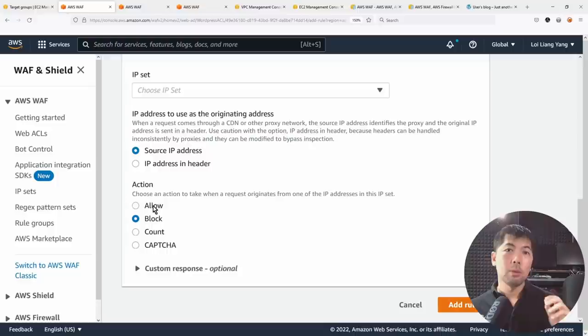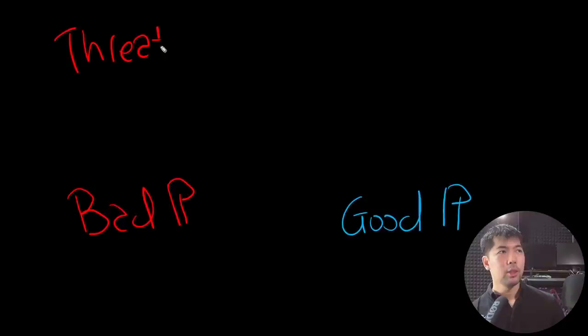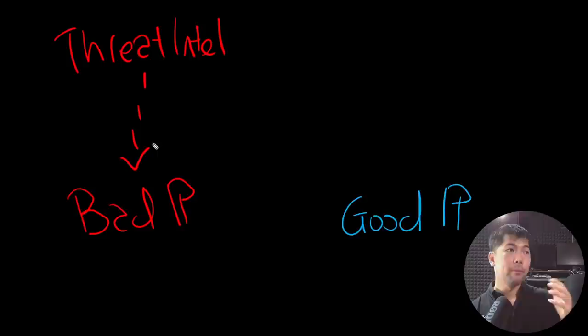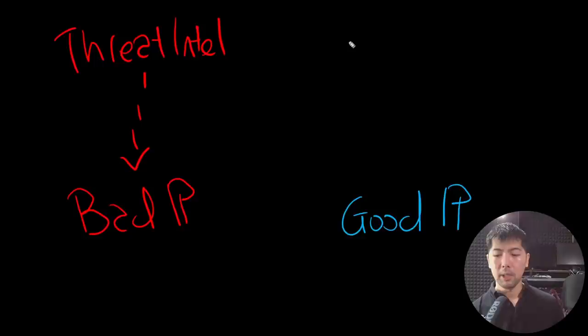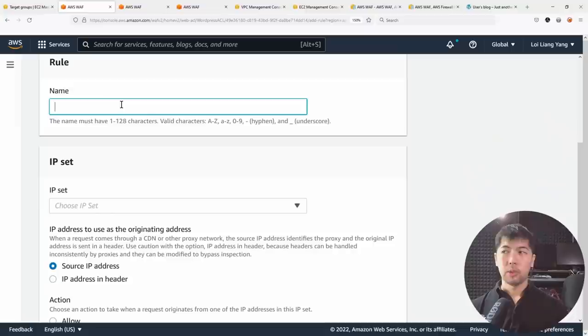There are two general use cases for IP sets in AWS WAF. First, bad IPs: you subscribe to threat intelligence feeds, they provide continuously refreshed lists of malicious IPs, and you inject them into a bad IP set to block them before they interact with any resources. Second, good IPs: your partner servers that you want to allow through — place them in a good IP set.